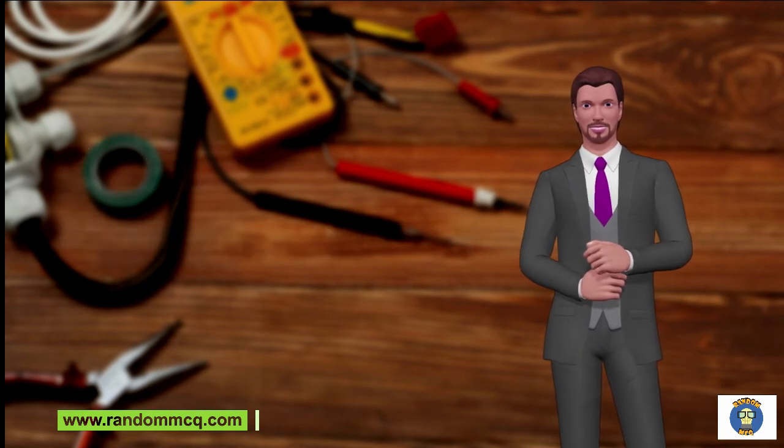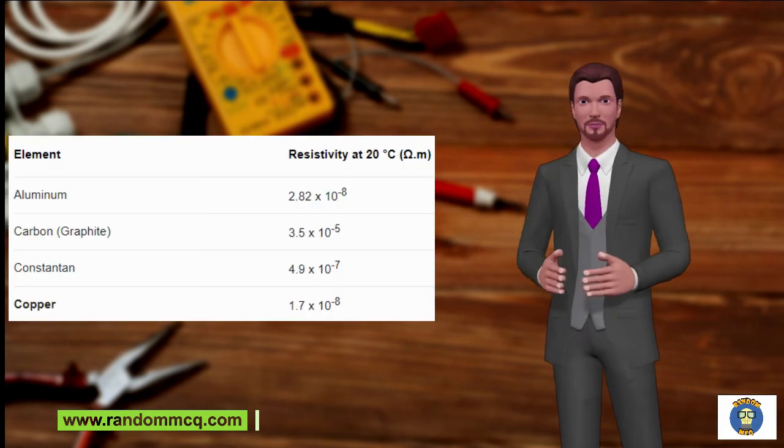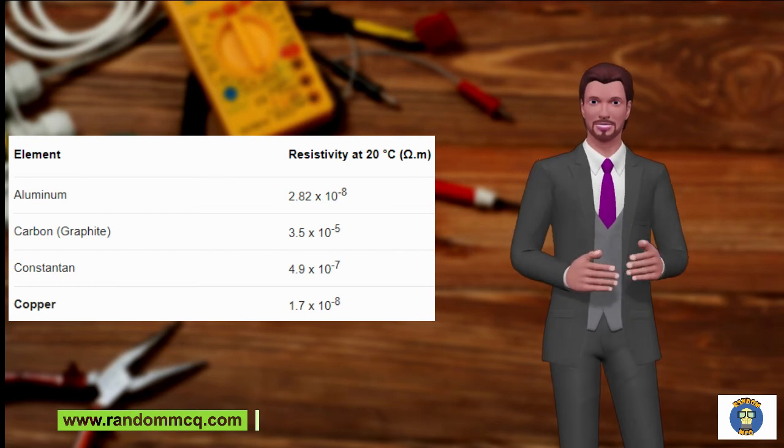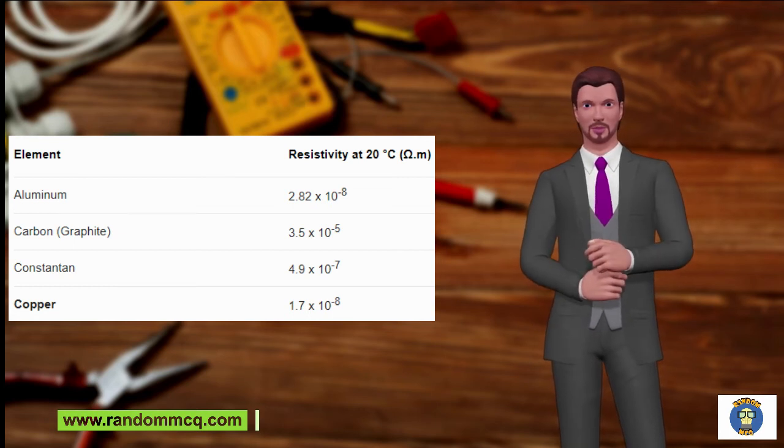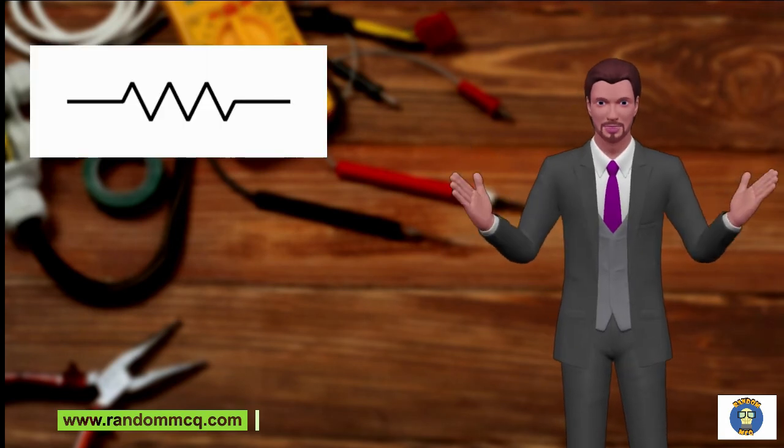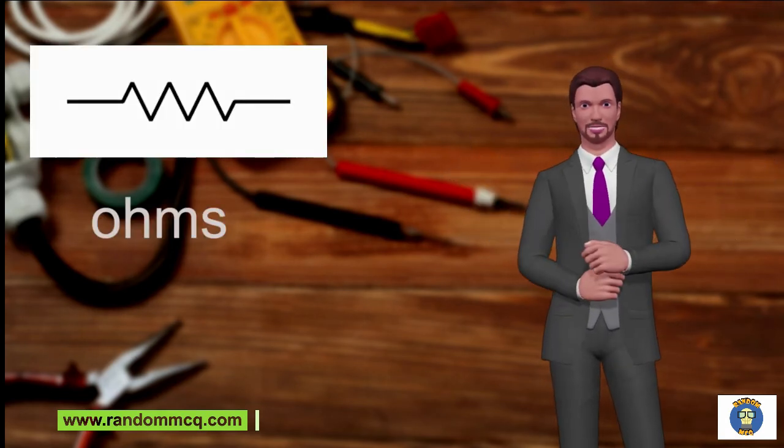The resistivity of different materials are given as follows. In this table, carbon is the most resistive element and copper is the least resistive. This is the schematic symbol of the resistor and the unit of resistance is ohms and uses the symbol omega.